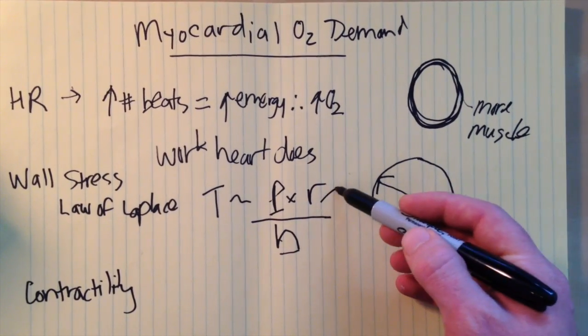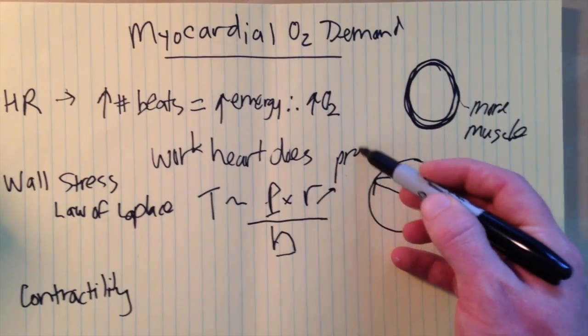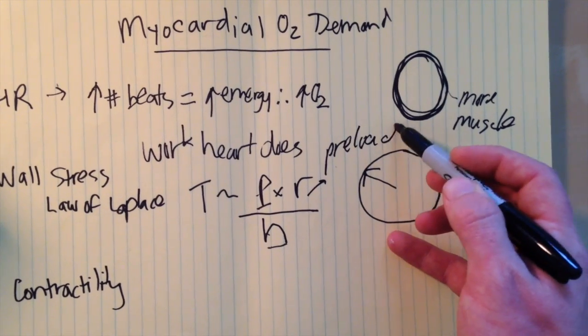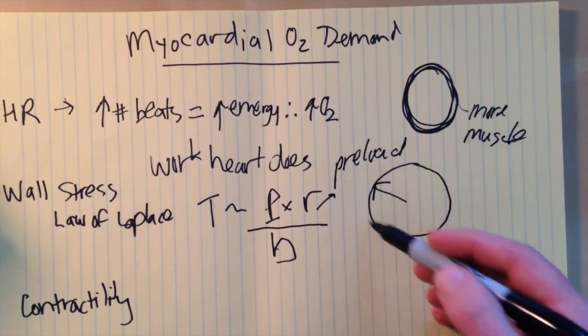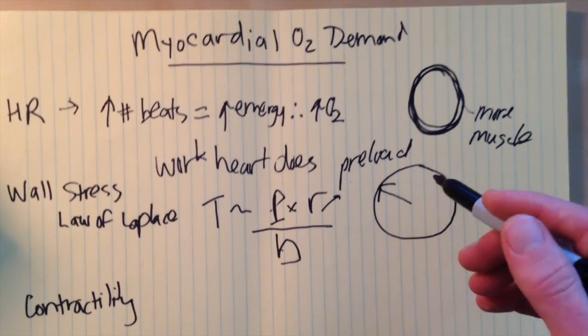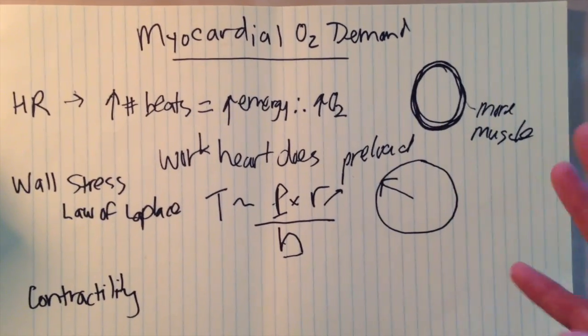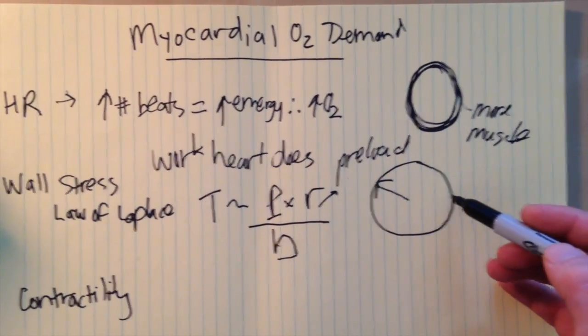The third factor of the law of Laplace is the radius of the ventricle. Now this is related to the preload and that's essentially saying that the bigger this circle is, or the greater the volume, the more work it's going to take to squeeze that volume back to the original size.